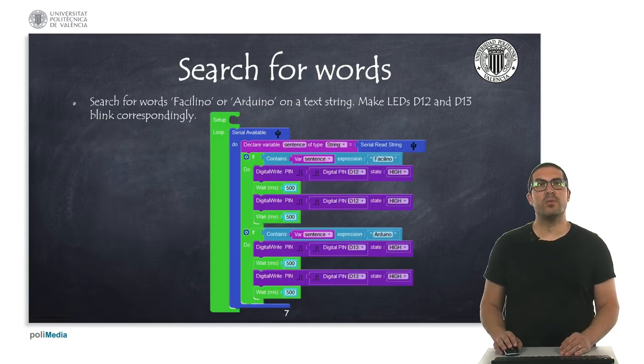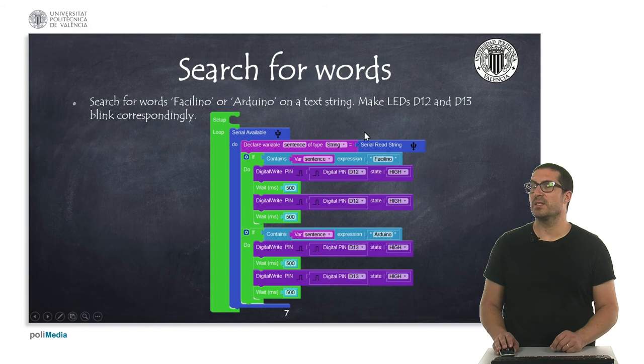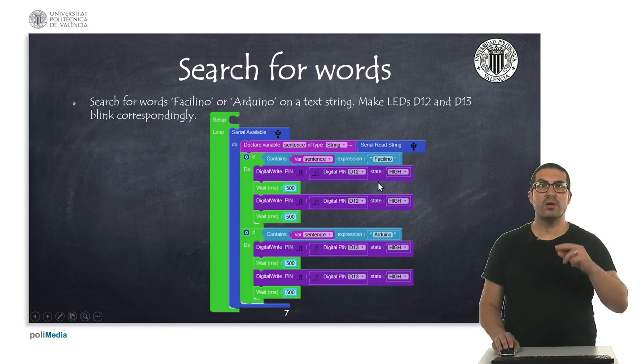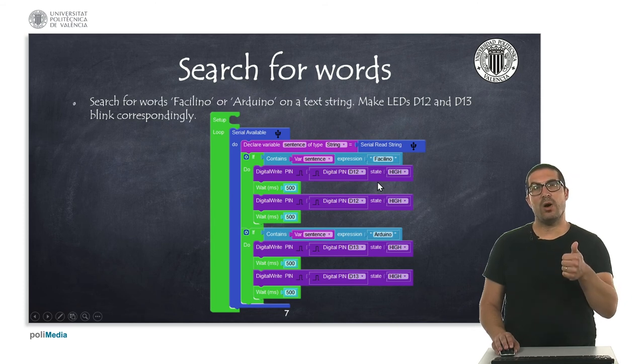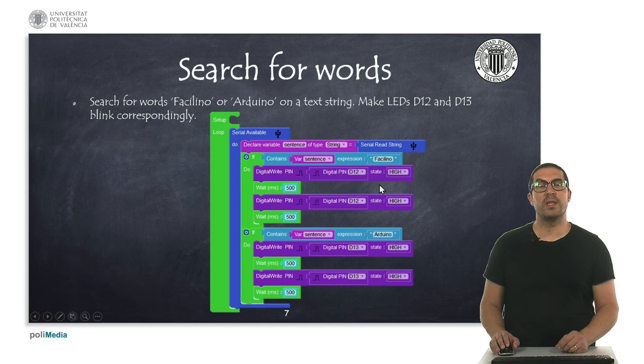In the last example, what we are doing is we are searching for specific words on a sentence. Again, we are reading the sentence from the USB serial monitor and we are searching for words Facilino and Arduino. And if we find Facilino, then we toggle, we set on and off the LED connected to pin D12 and if we find something with the word Arduino, then we do the same thing, but with the LED connected to pin D13.